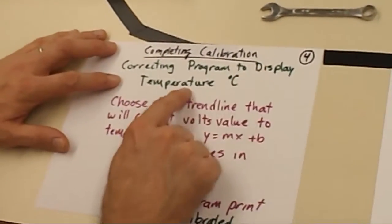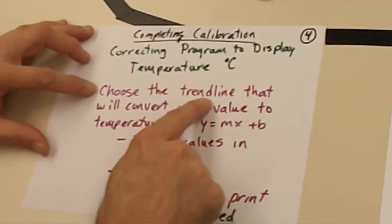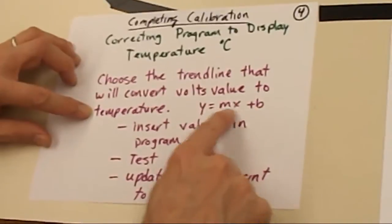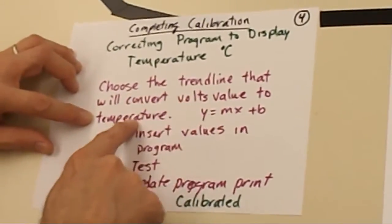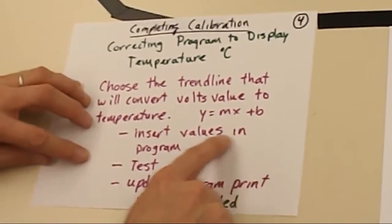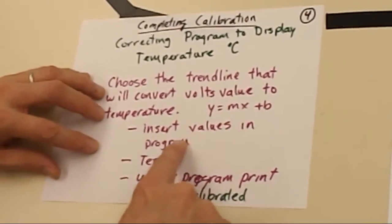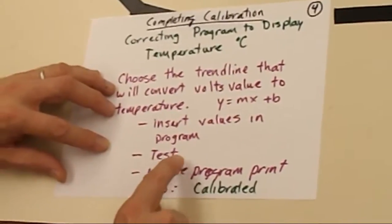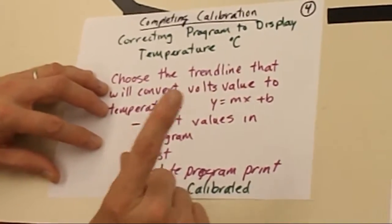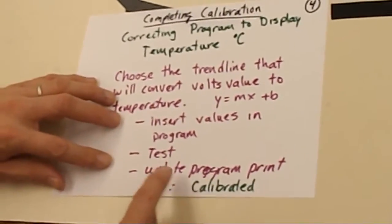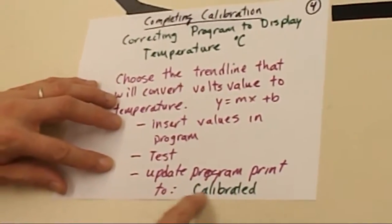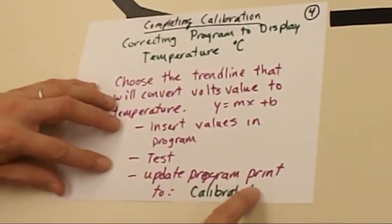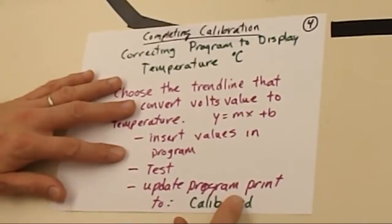So basically, we're going to correct the program to display the temperature in degrees C. What you have to do is choose which trend line that will convert the voltage value that it's read into temperature. So from your two graphs, you select that equation from the trend line that allows you to convert voltage into temperature. So we're going to select the slope and the y-intercept values, and we're going to insert them in the program. If you read the program carefully, you can see where there's a conversion formula. So use your values, insert them, rerun the program, verify it and load it, and then test it out and see how close your program reads to the actual temperature on a couple of your samples. Once that's correct and it looks like it's working properly, update the program to actually say that it's a calibrated value.